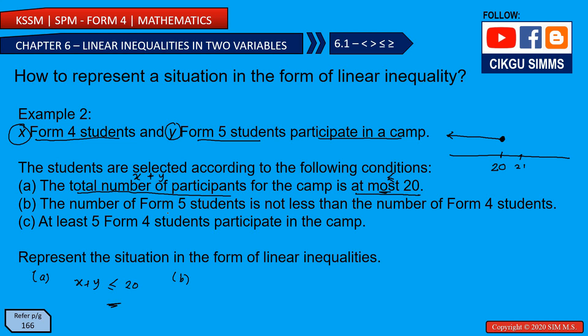Condition B: the number of Form 5 students, y, is not less than the number of Form 4 students, x. 'Not less than' means it can be equal to or more than. So y is greater than or equal to x, because Form 5 students cannot be fewer than Form 4 students.